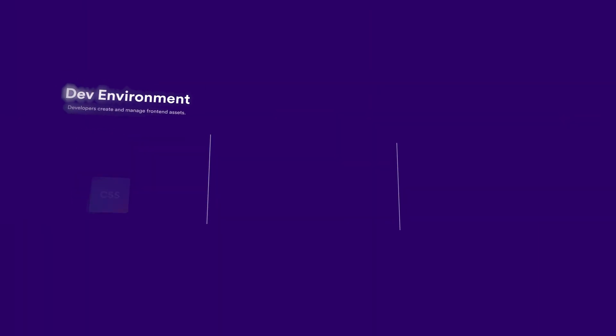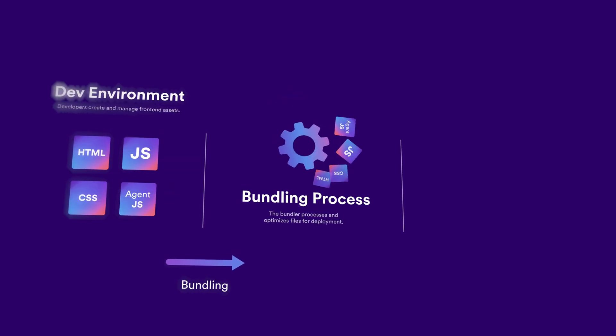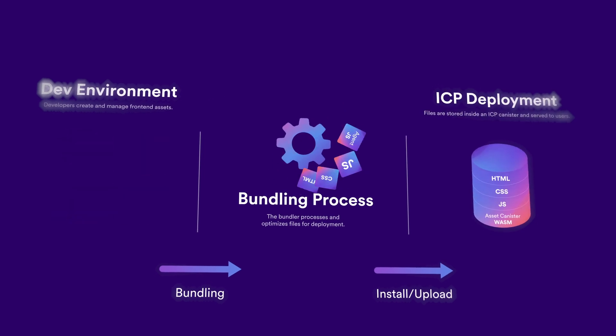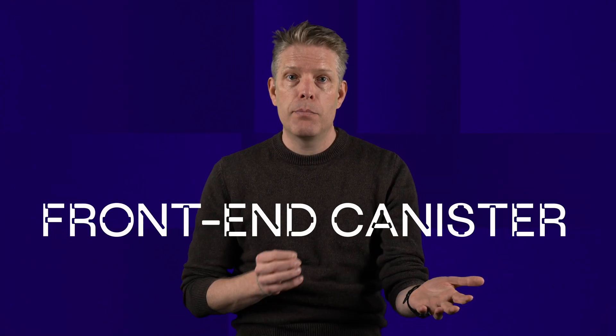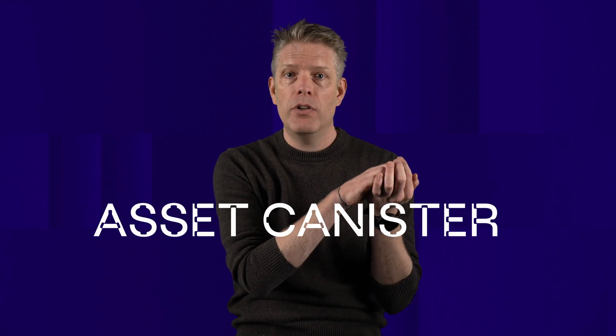The back-end smart contract stores the dApp's state and contains the business logic that can perform computations and state changes. A developer builds a front-end using HTML, style sheets, and vanilla JavaScript, or a framework of their choice such as React or Svelte. To deploy the front-end, a front-end canister is created. Then a special WebAssembly module called the asset canister is installed, and the front-end files are uploaded to this asset canister — think of it as a basic on-chain web server. There are different language options for the back-end, giving developers extra flexibility. Ultimately, the back-end code is compiled to WebAssembly and deployed into the back-end canister.